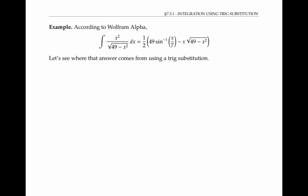As our first example, let's look at the integral of x squared over the square root of 49 minus x squared. According to Wolfram Alpha, this integral evaluates to an expression involving a square root expression and a sine inverse, which just seems to come out of the blue here.